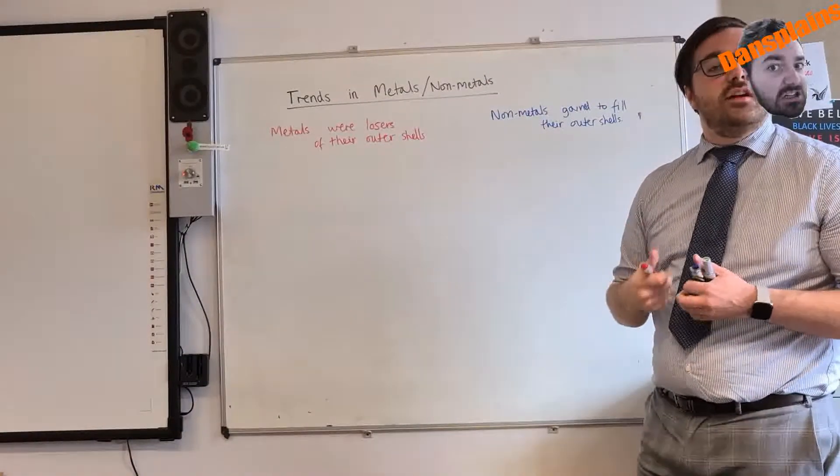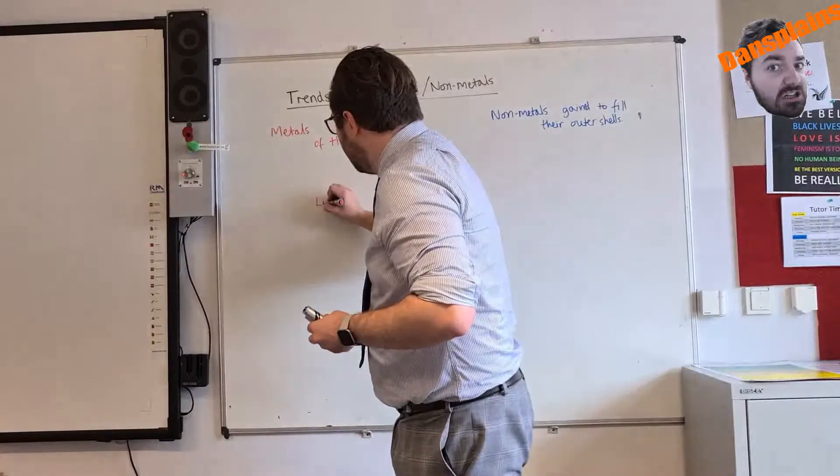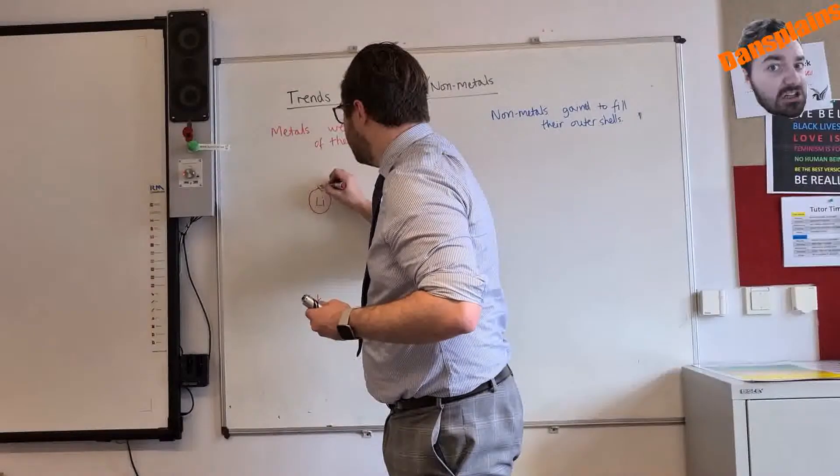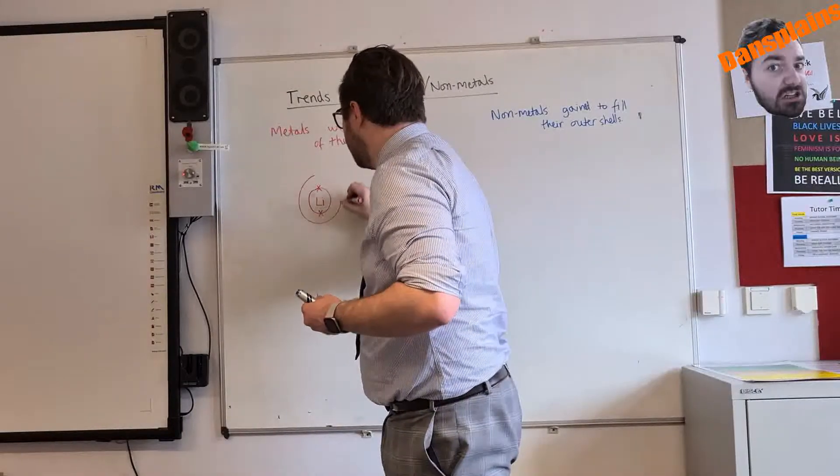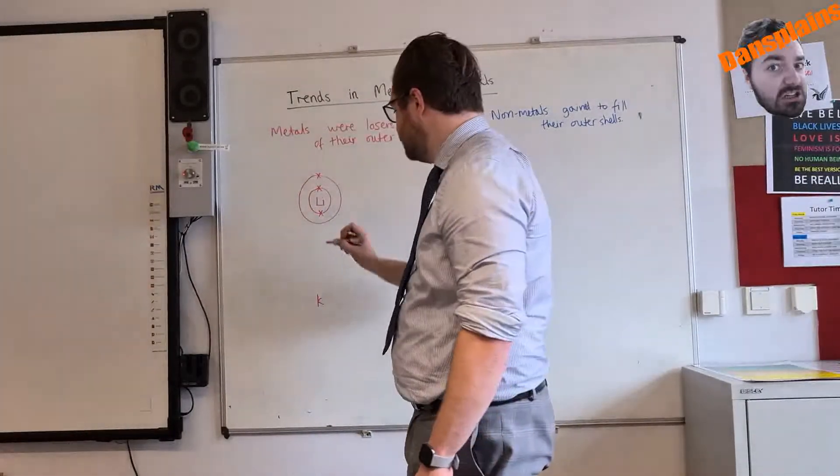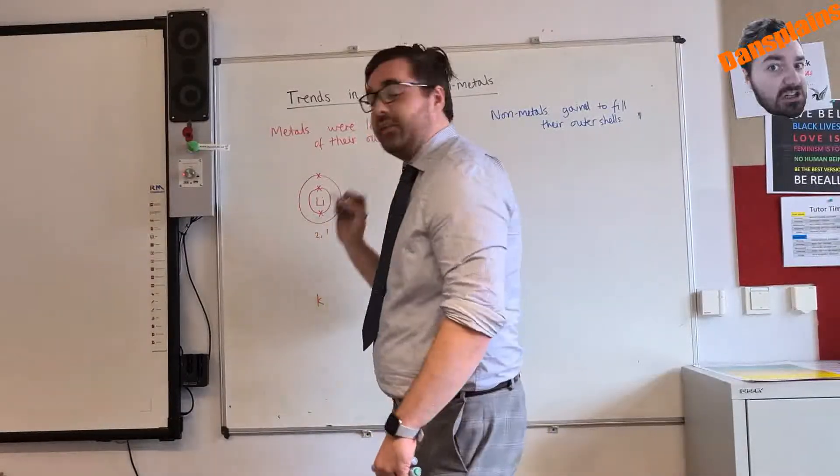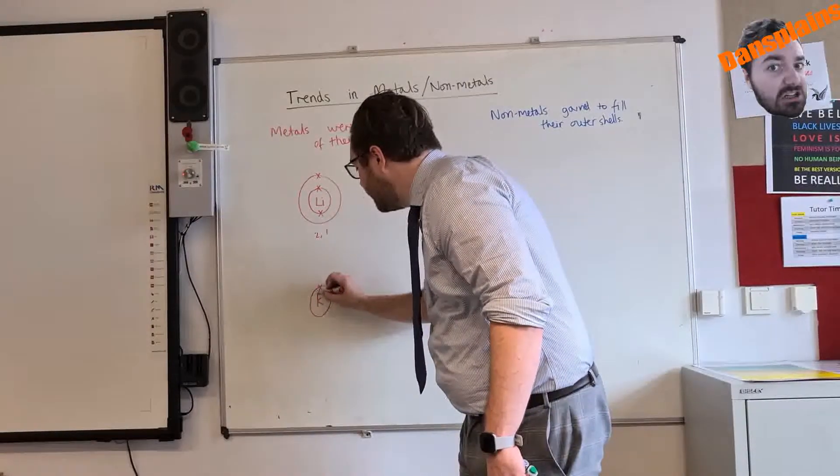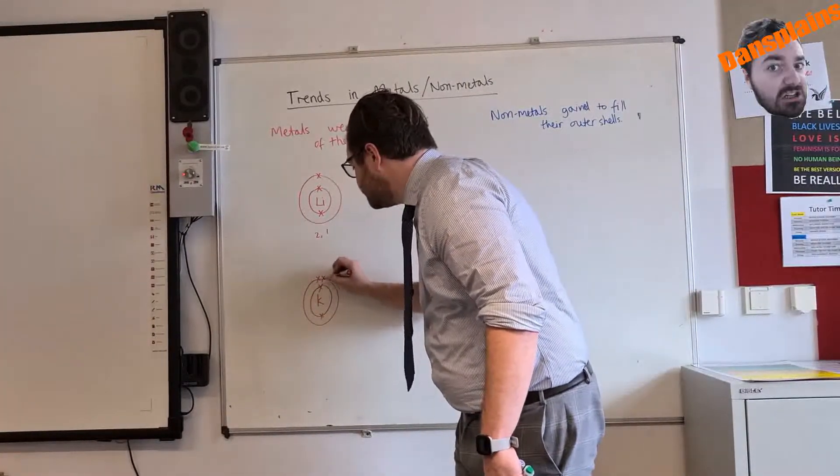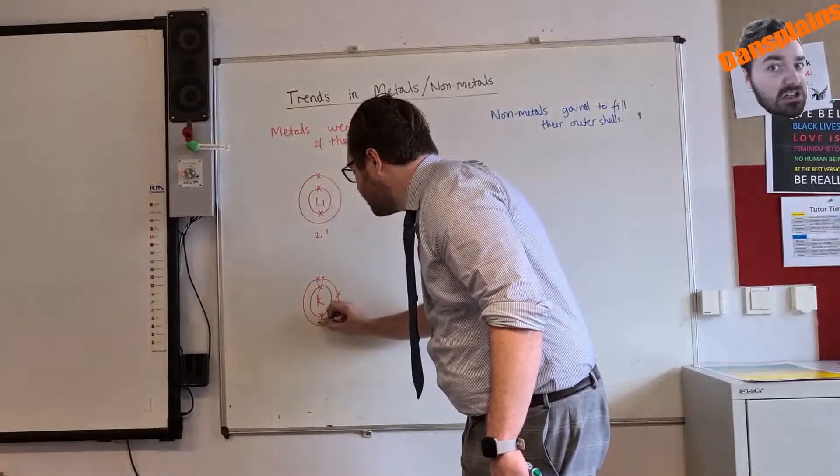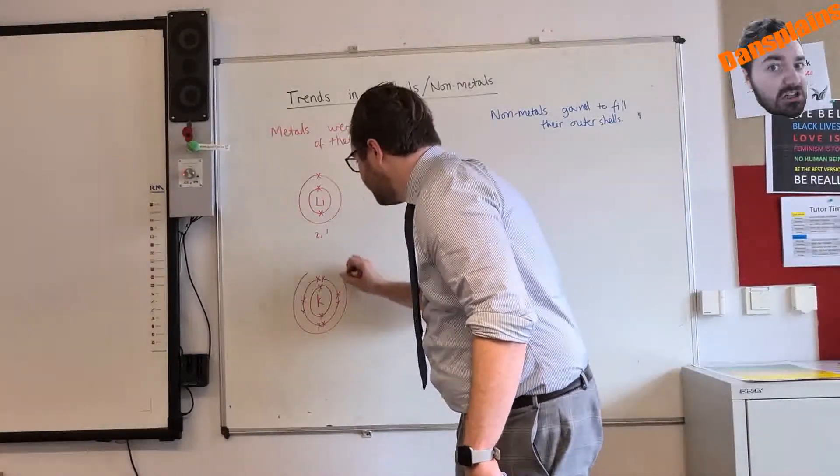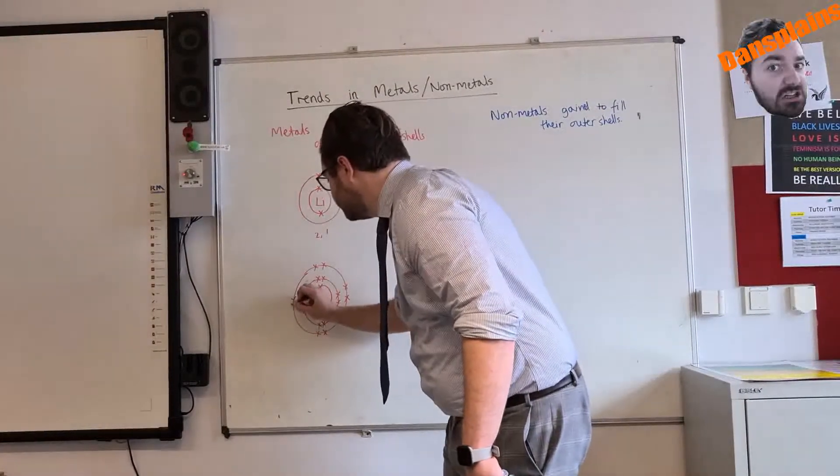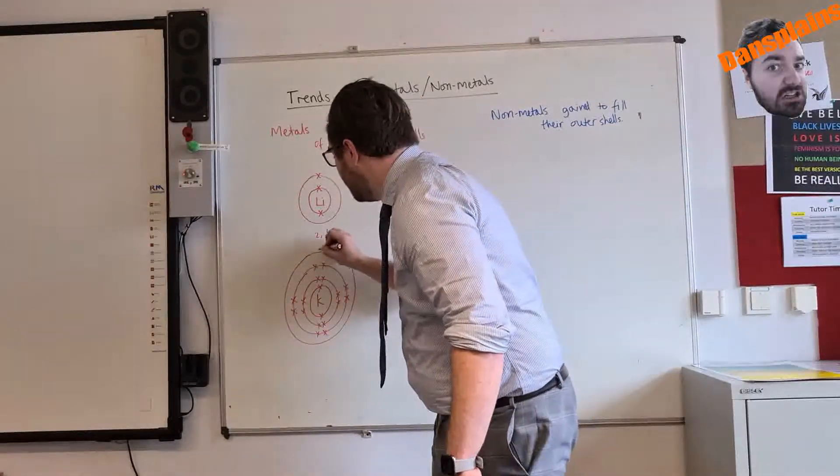So we're going to use this as an example now. If I have lithium and I have potassium, lithium has the arrangement 2,1. Potassium, in the same group, has 2, 8, 8, and 1.